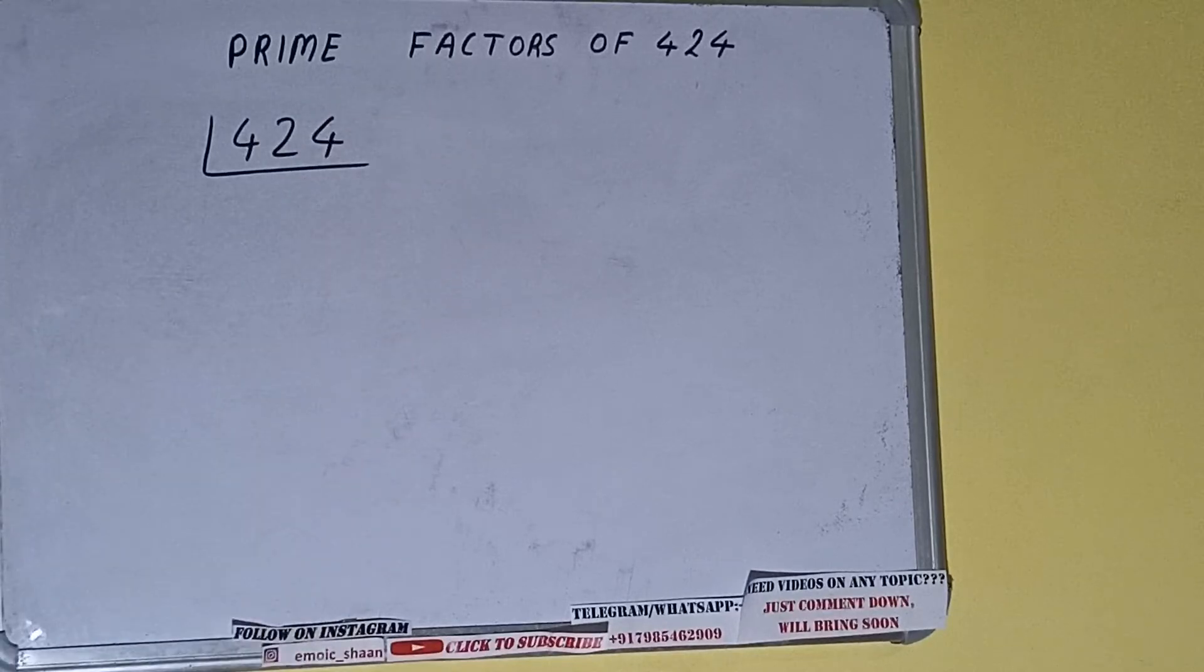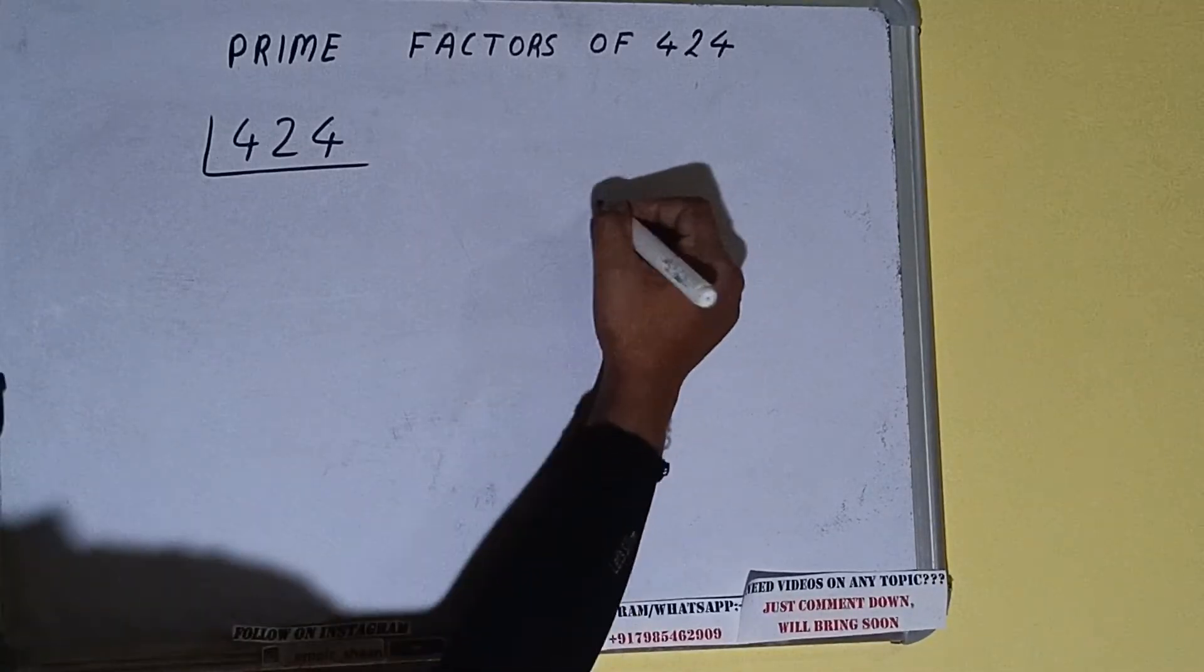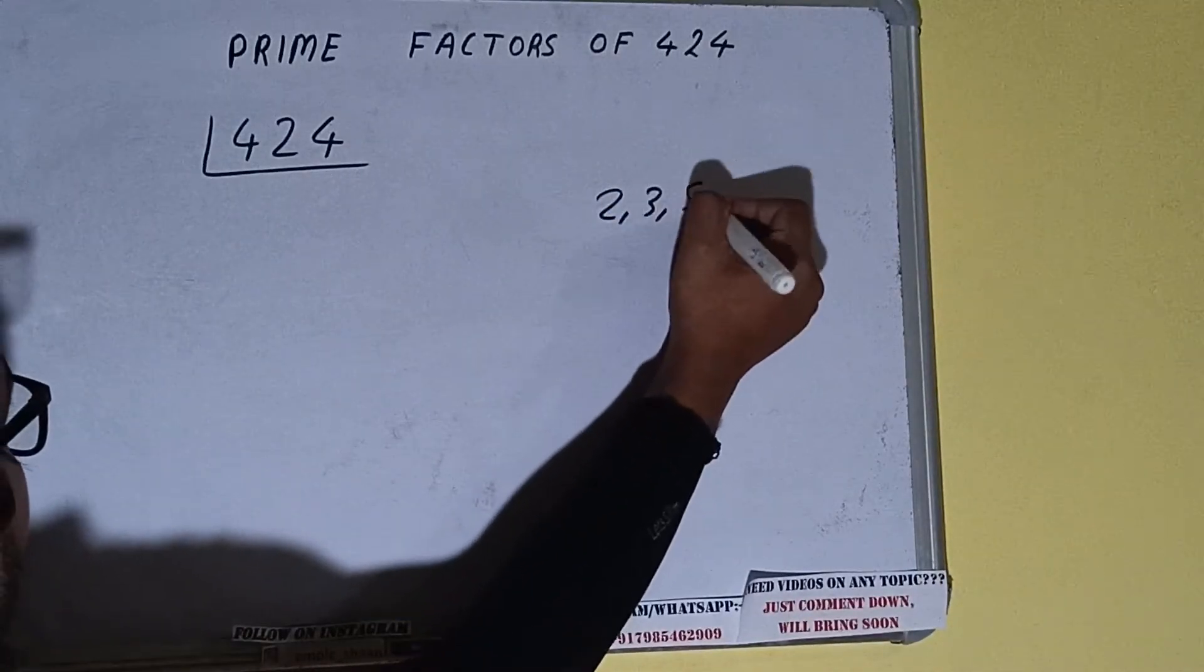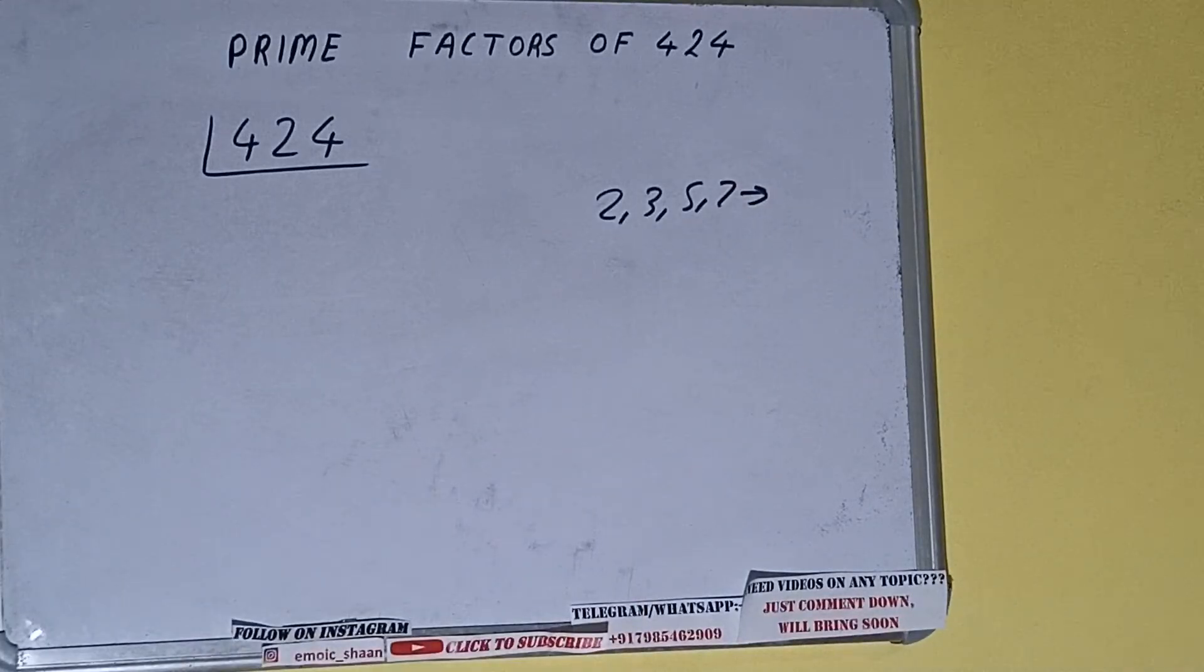The next thing we need to know about is what are prime numbers. Prime numbers are numbers that are divisible by 1 and the number itself, like 2, 3, 5, 7, and so on. Alright.